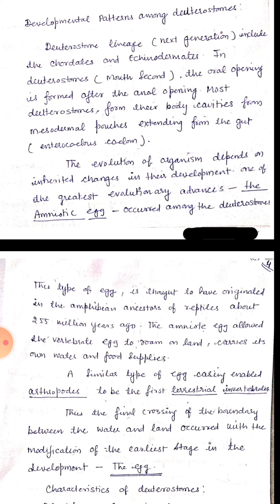Deuterostome lineages include the hemichordates, chordates, and echinodermates. In deuterostomes, the oral opening is formed after the anal opening. Most deuterostomes form their body cavities from mesodermal pouches extending from the gut — that is, enterocoelic type of coelom is present in these animals.